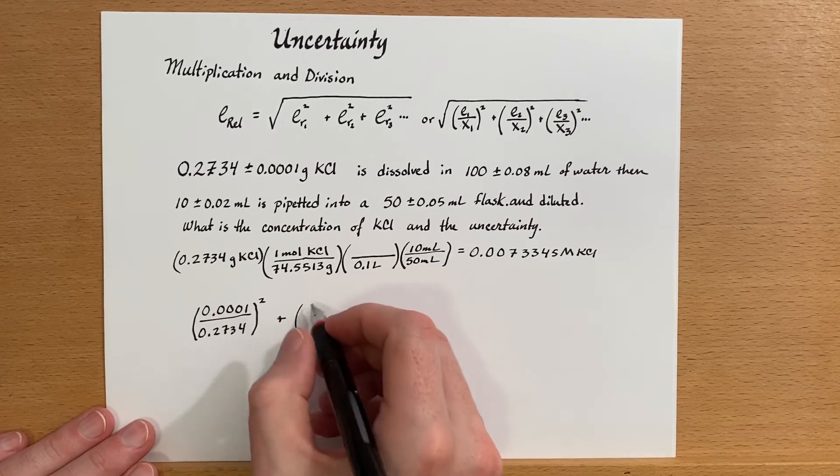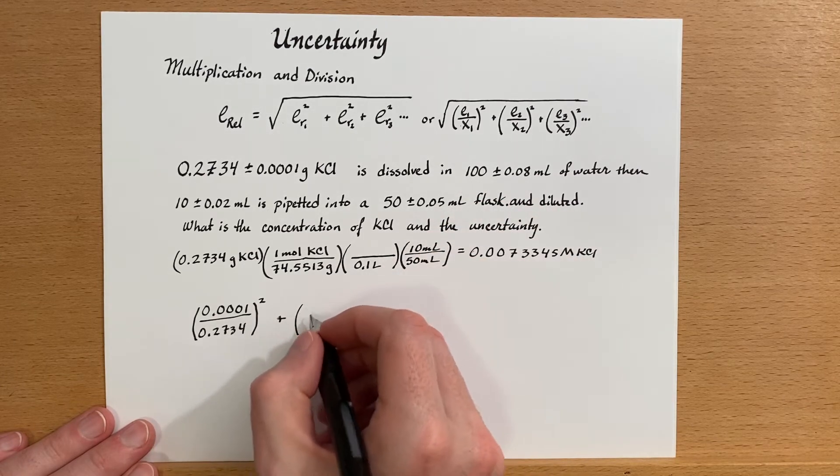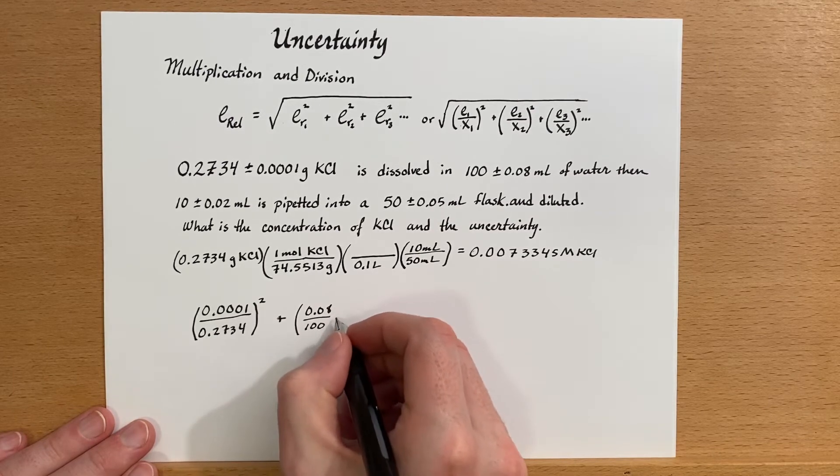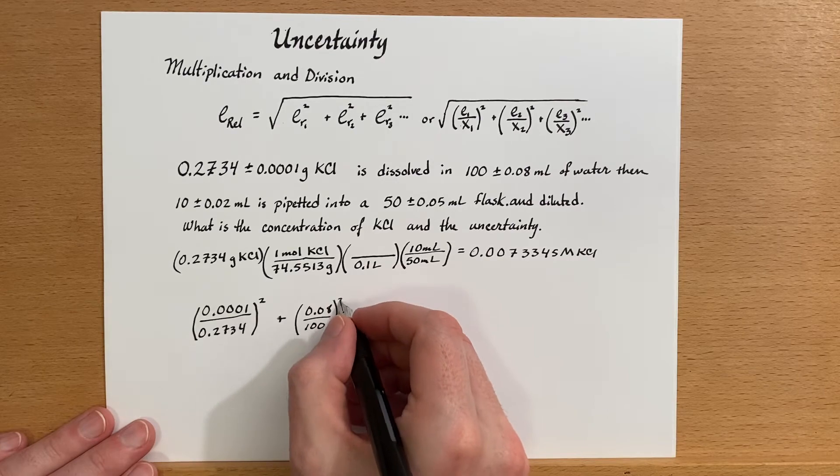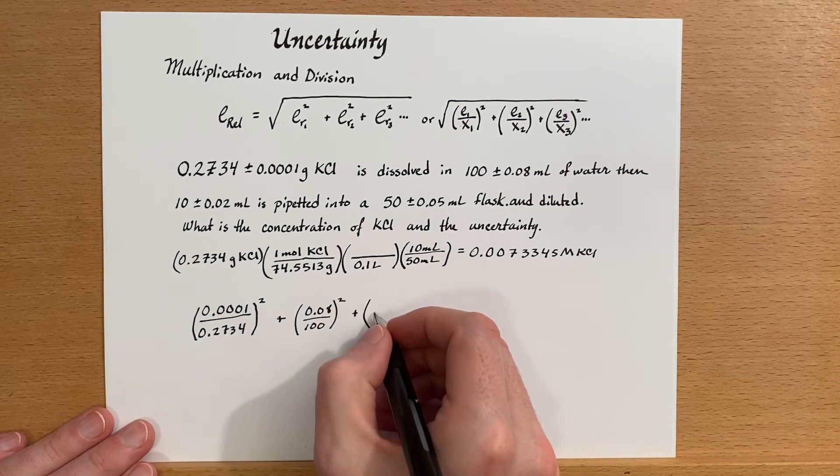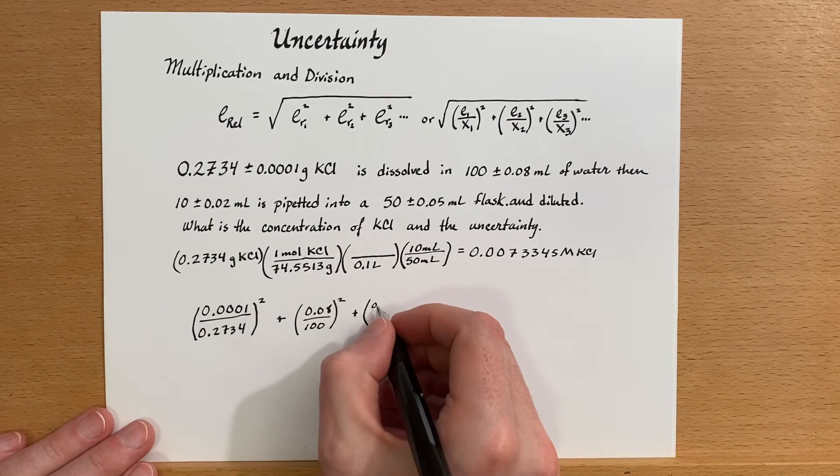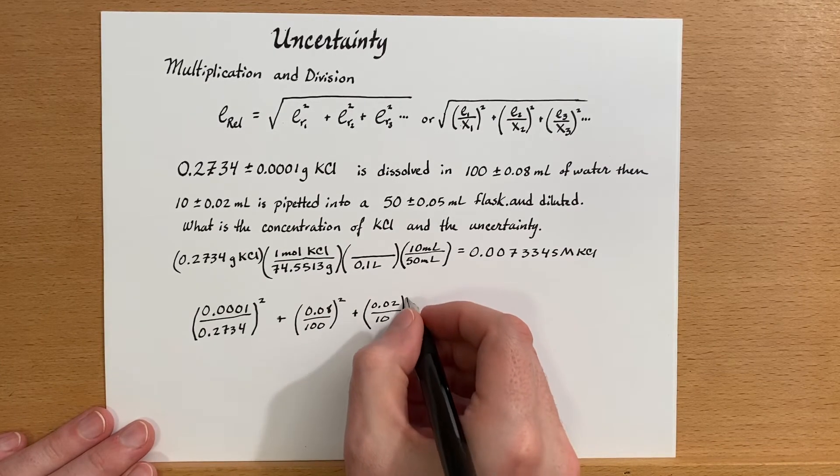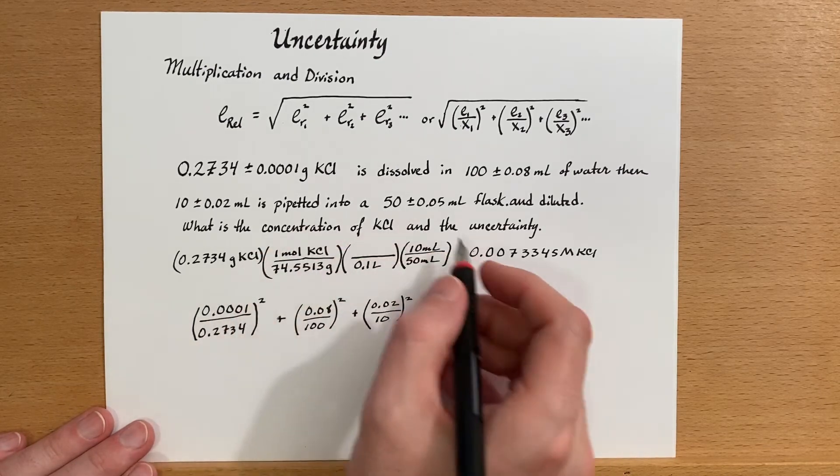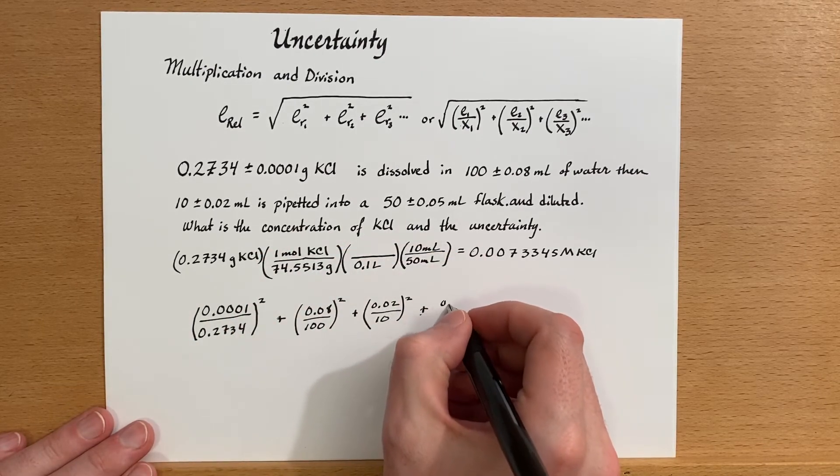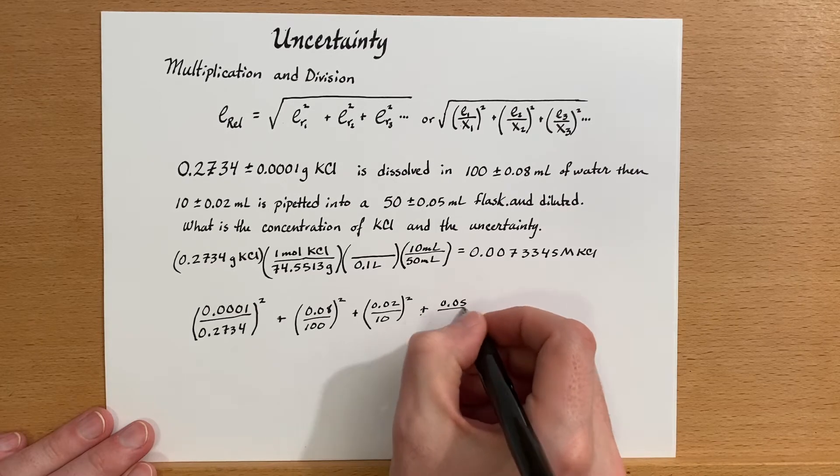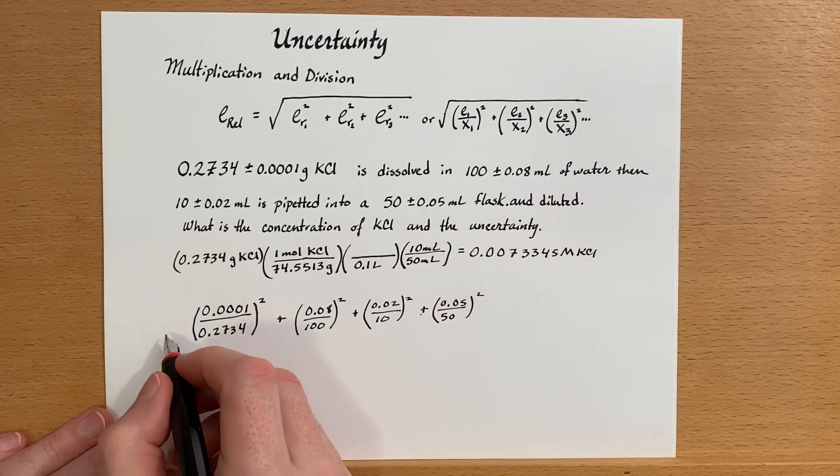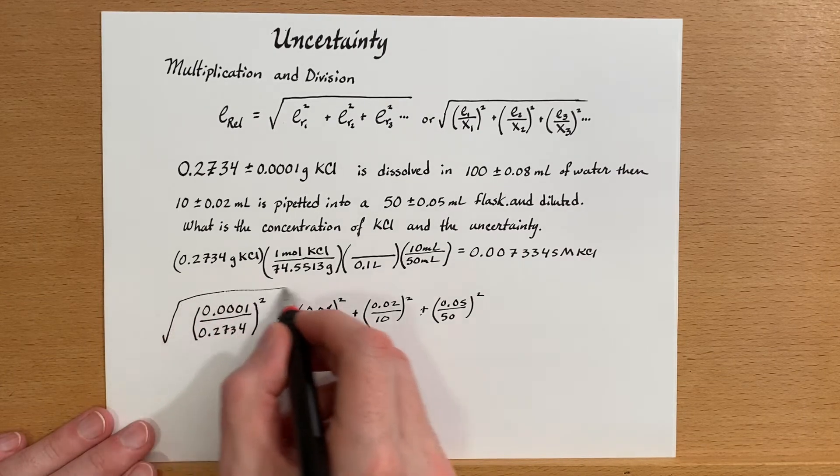So 0.08 divided by 100 for our first flask, squared plus, and then 0.02 over 10, square that plus, and then 0.05 over 50, squared, and then this whole thing is going to be square rooted.